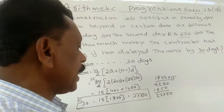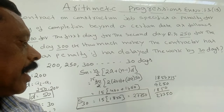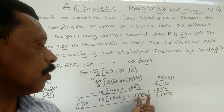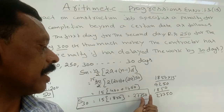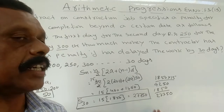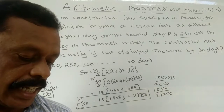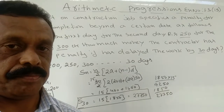Therefore, the contractor must pay a penalty of rupees 27,750 for the 30-day delay.